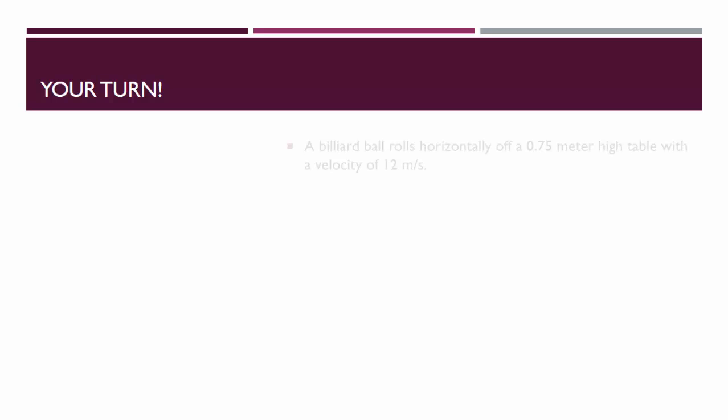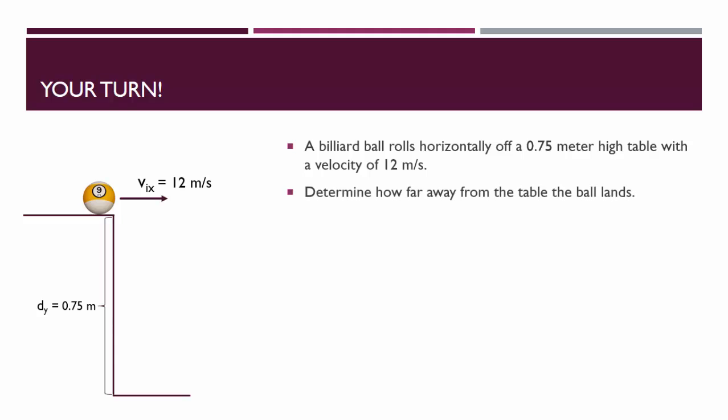You try one. Let's say that we have a billiard ball that rolls horizontally off a 0.75 meter high table with a velocity of 12 meters per second. A picture of this would look something like that. I want you to figure out how far away from the table the ball would land.